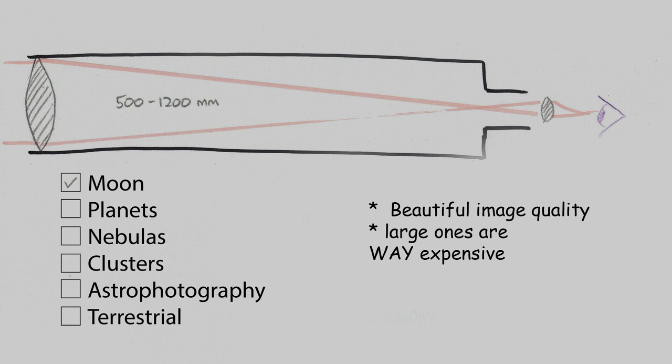They're great for the moon, pretty useless for planets but they're the best for large nebulas, good for star clusters and fields and they're amazing for astrophotography and the short ones are best for terrestrial view. But they get very expensive when you get a big one.